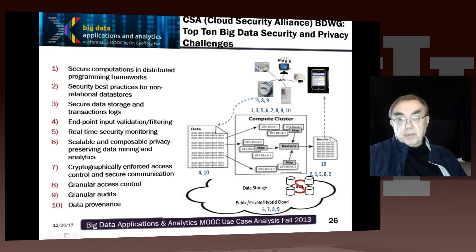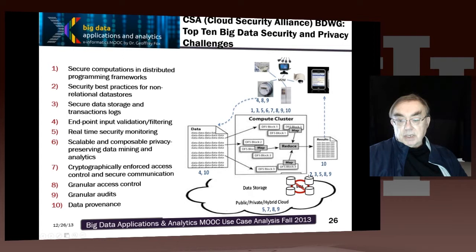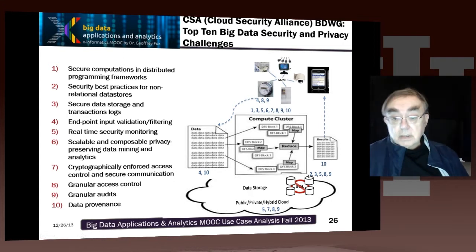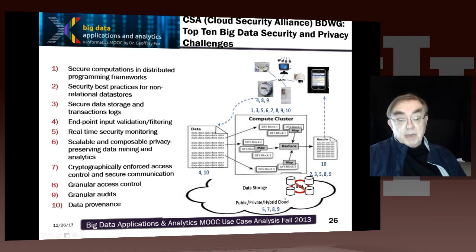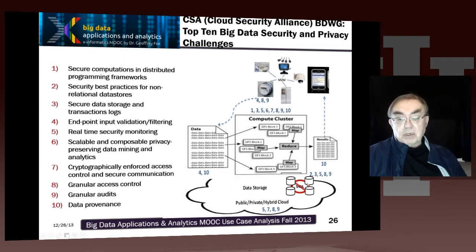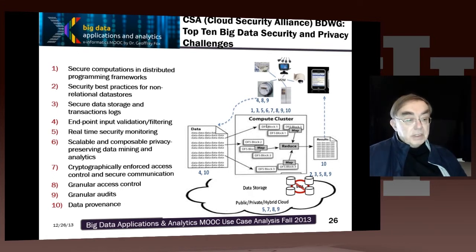The compute cluster has a whole bunch of these challenges. Ten is data provenance — that's keeping track of everything that's going on. Here we have a SQL database, or just data storage — it's all in our public, private, or hybrid cloud. These are the different components of the big data processing: the data streaming in, the system being tracked, data being stored, data running on clouds, and clusters being accessed. I will go through what these ten challenges actually are on the next slide.